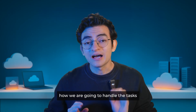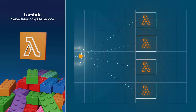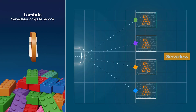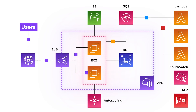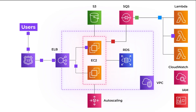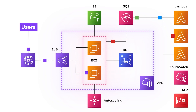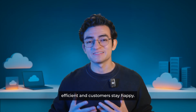But how are we going to handle the tasks that are in the queue? AWS Lambda allows you to trigger pieces of code without needing a server — this is what we call serverless. Lambda will read the orders from the SQS queue and process them: for example, update our database inventory, schedule the shipping order, and send the email 'your order is on the way.' This way the system becomes efficient and customers stay happy.